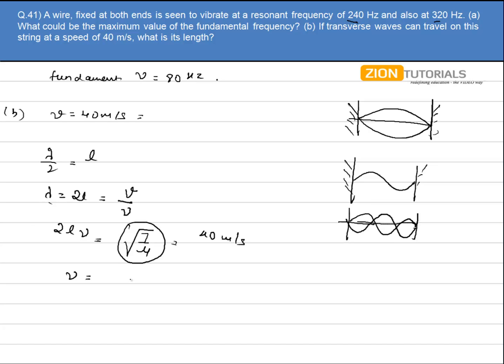The length is what I have to calculate. 40 divided by 2 times 80 gives 40 by 160, so it comes out to be 1 by 4 or 0.25 meters. That is the answer.